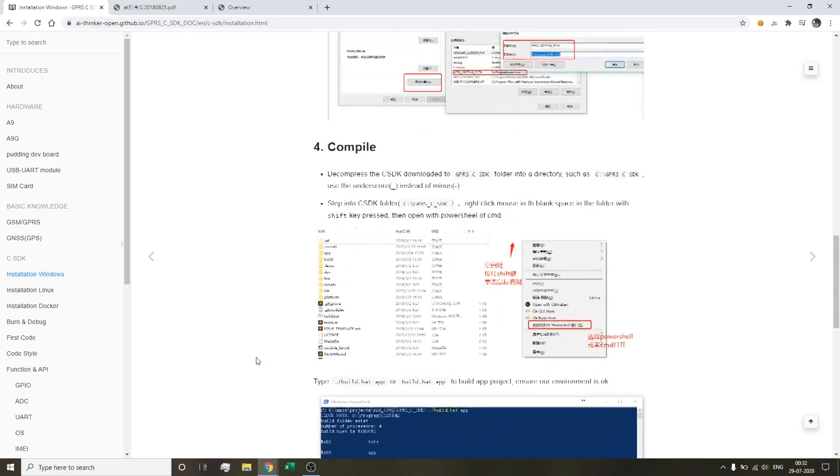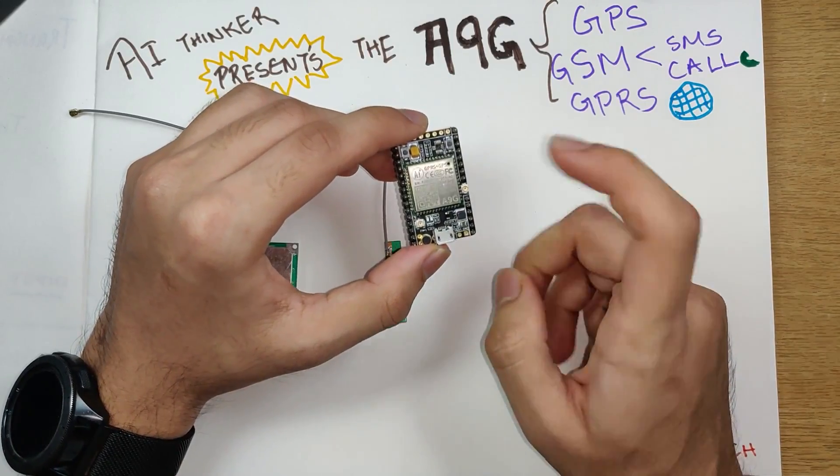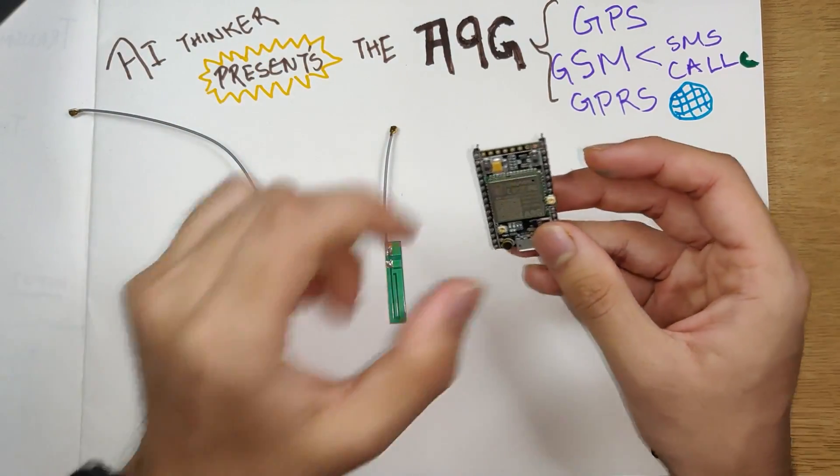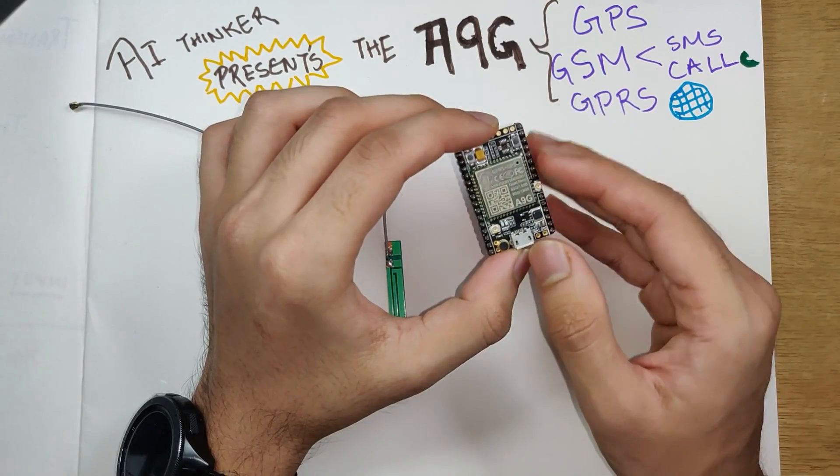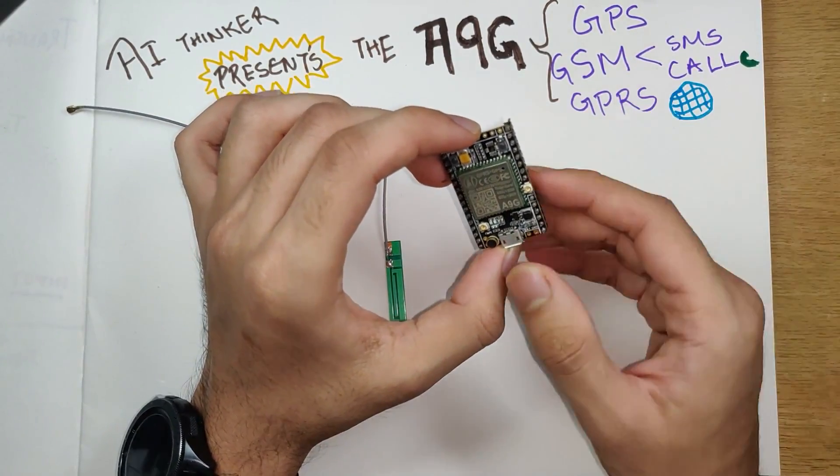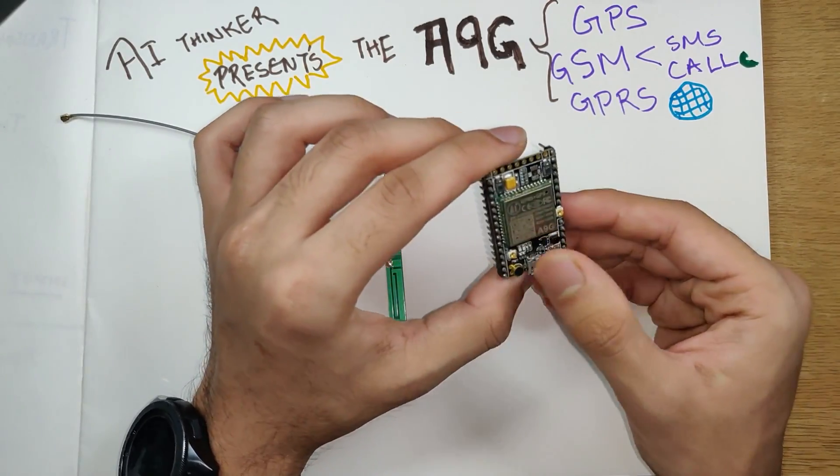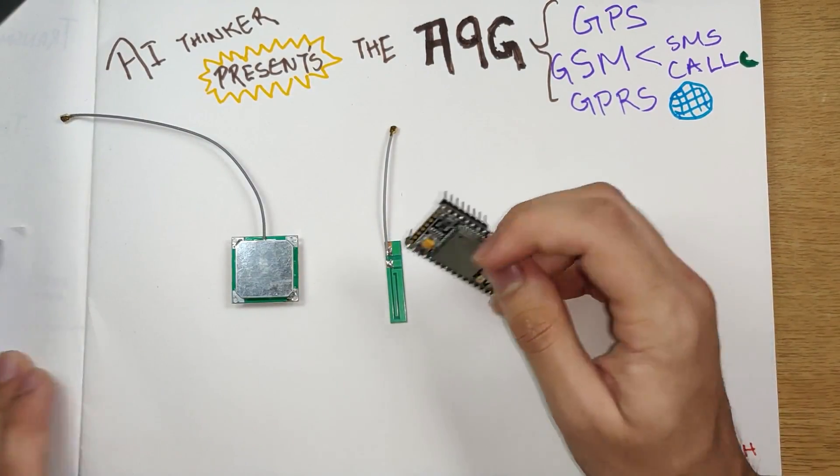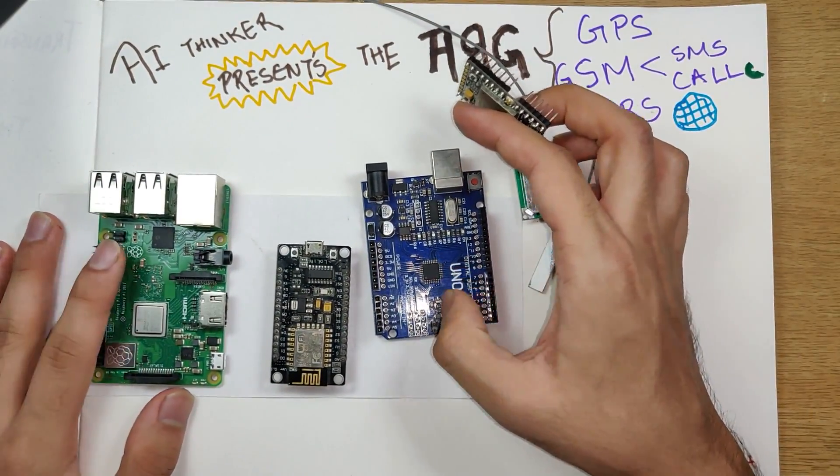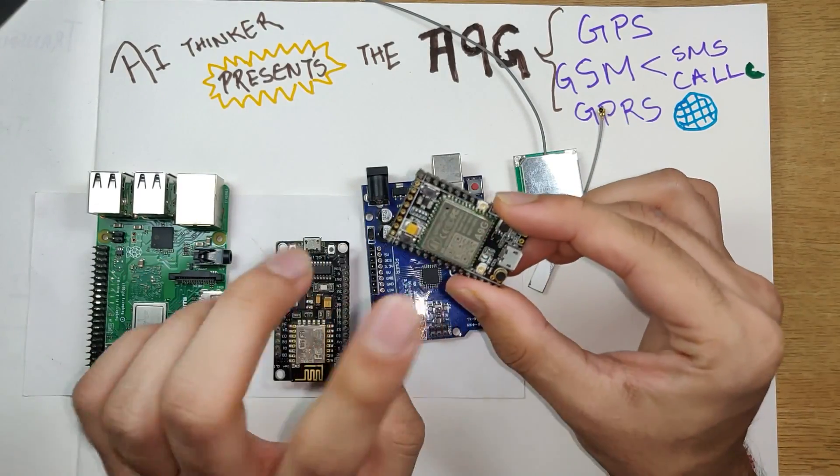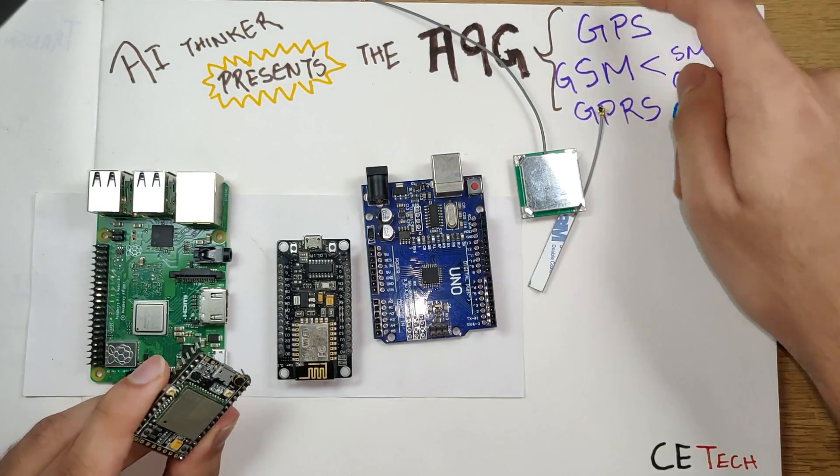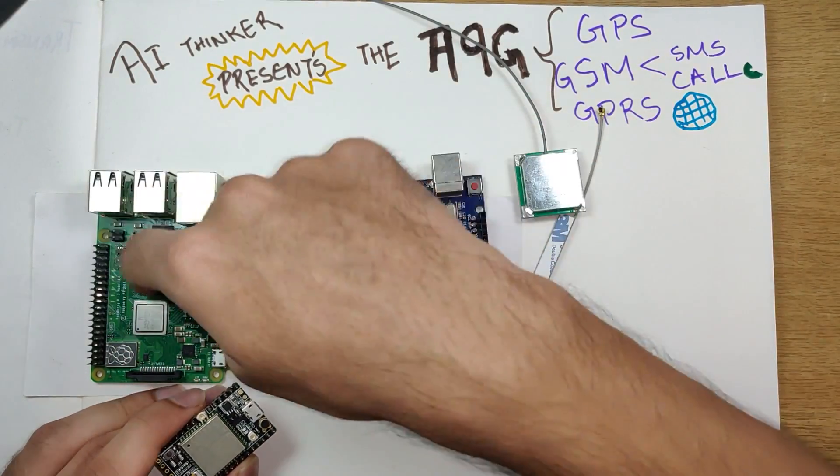The SDK is based on C code. You need to write some C code, flash your program into the module, and then you'll be good to go. By default, this A9G module comes with a bootloader firmware which accepts and transmits AT commands. You can control this using any Arduino, your ESP module, or your Raspberry Pi.